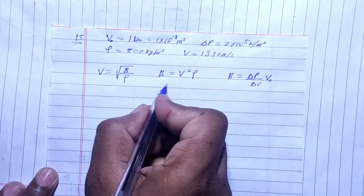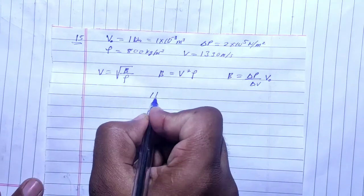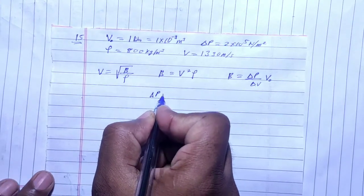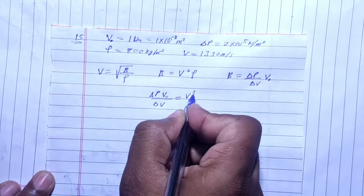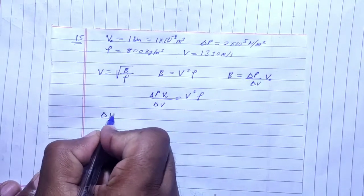Change in pressure times volume upon change in volume equals v² times ρ. So change in volume will be: ΔV = (ΔP × V)/(v² × ρ). This is our formula.